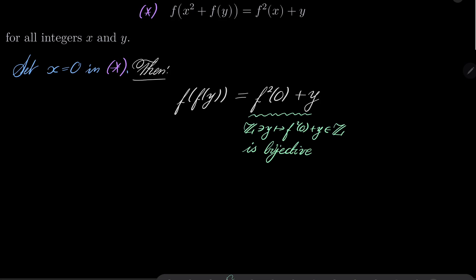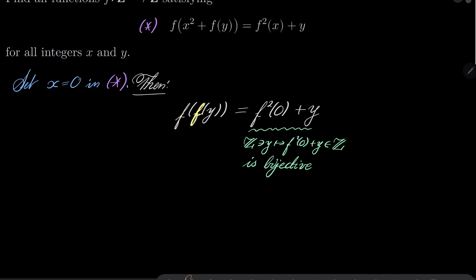And since this is bijective, we know that the inner function, which is f, must be injective, and the outer function, which is also f, must be surjective, which combined means that f itself must be bijective.